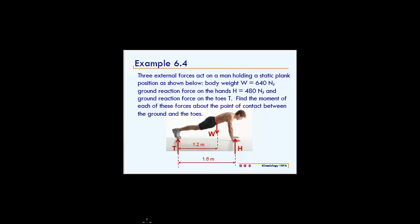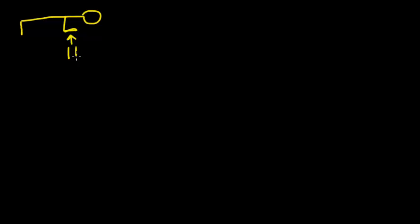We're going to start off by drawing a free body diagram. We have point H where the ground reaction force is on his hands, we have a weight W, and we have a point T. The distance between point T and his weight is 1.2 meters, and the distance between point T and his ground reaction force H is 1.6 meters.